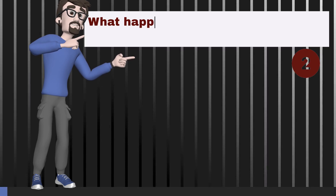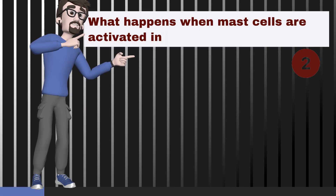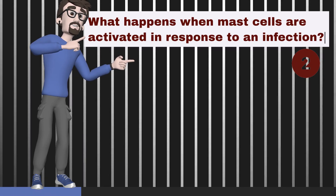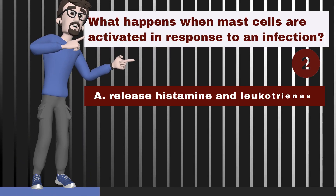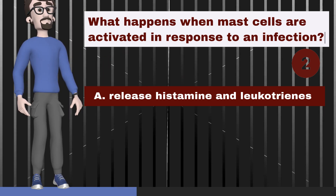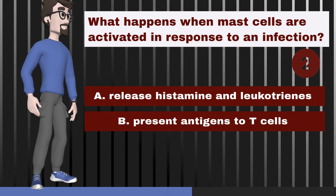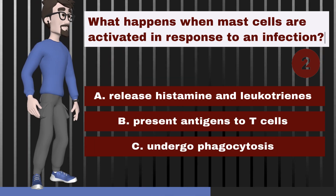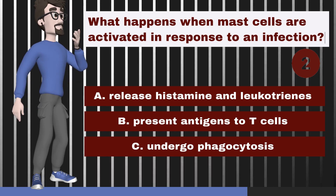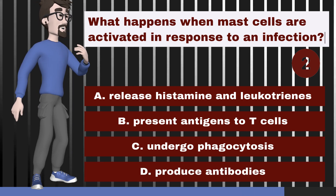What happens when mast cells are activated in response to an infection? A. They release histamine and leukotrienes. B. They present antigens to T cells. C. They undergo phagocytosis. D. They produce antibodies.